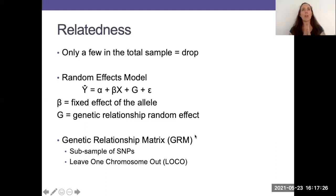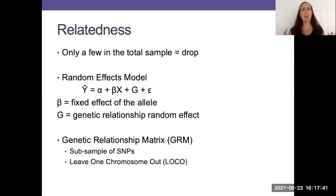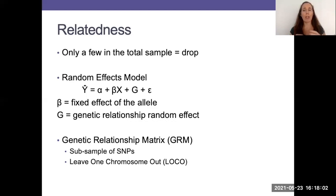When collecting data on millions of variants across hundreds of thousands of individuals, computing a full genetic relationship matrix is going to be huge — computationally and memory demanding. So what is typically done is we take a subsample of SNPs to construct the GRM, and that gives a good representation of genetic relationship in our data.